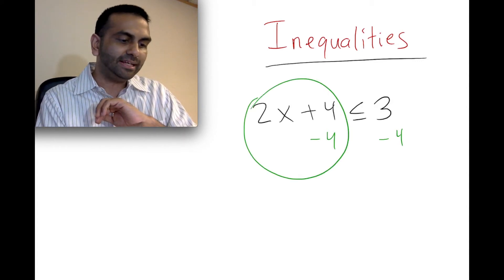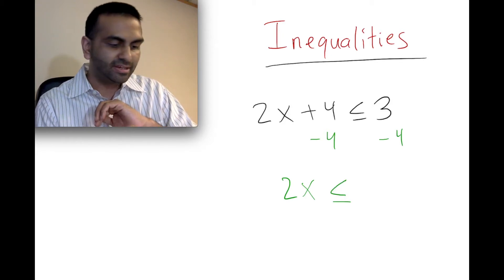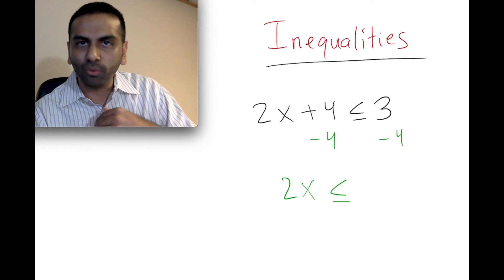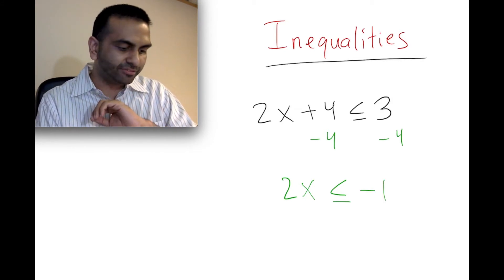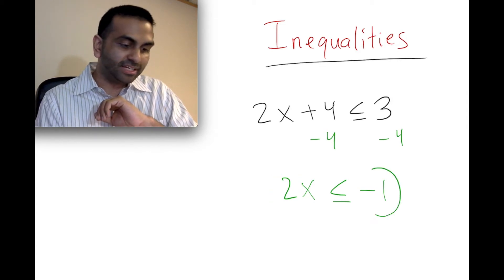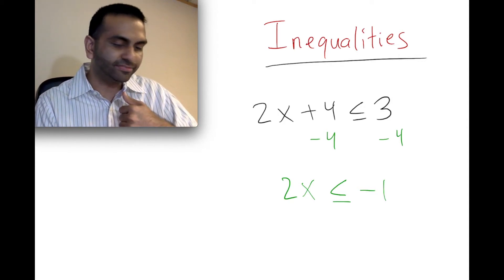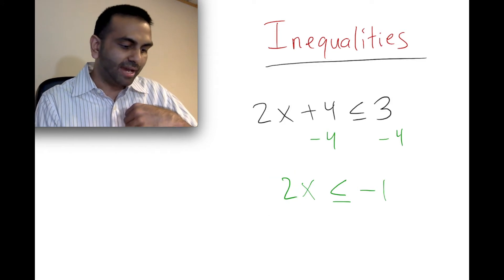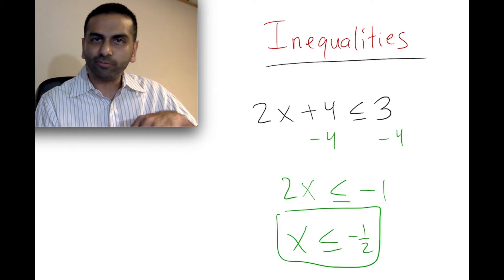On the left-hand side, the four is canceled, so we just have 2x. Keep the sign as is — less than or equals. On the right-hand side, we have 3 minus 4, which is negative 1. Now to get x by itself, we divide both sides by 2. Even though there's a negative on the right, we're dividing both sides by a positive number, positive 2, so we're not going to flip the sign. So x is less than or equal to negative 1 divided by 2, which is negative one-half. That is our final answer: x is less than or equal to negative one-half.